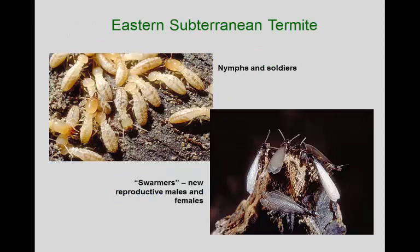Here's a close-up of our eastern subterranean termite. The workers are often called 'white ants' — they're blind, because they live in the ground or in wood where there's no light and no need for eyes. You can also see a soldier with an enlarged head capsule and big mandibles, there to protect the colony from invading insects — ants are usually the biggest predators. Over here are the winged reproductives, both males and females.